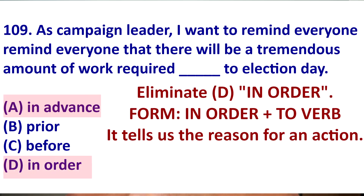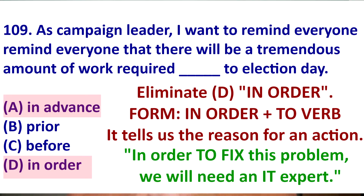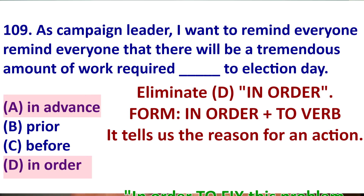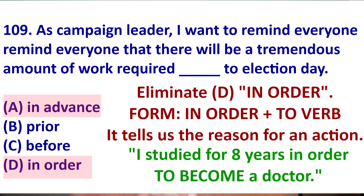Next, eliminate 'in order.' When you use 'in order to,' it's going to be followed by a verb, and it tells us the purpose or reason for doing an action. For example, in order to fix this problem, we are going to need an IT expert — notice: in order to verb, to fix. Or, I studied for eight years. Why? In order to become a doctor. Notice: to become, to verb.